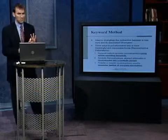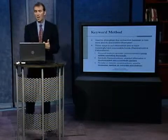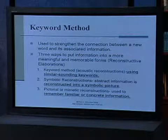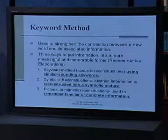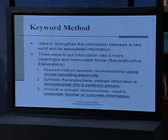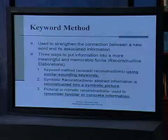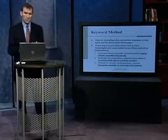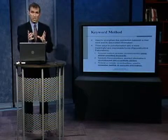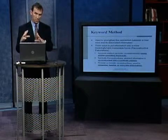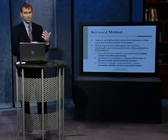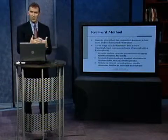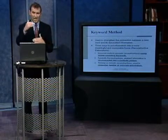There are three parts to the keyword method. The first is you take an acoustically similar sounding word and match it to the new vocabulary term. It's important that this similar sounding word must be familiar to the students — this will be dependent upon the grade level and ability level of the students. Second, the abstract information or definition is then represented in a picture that represents the information we want students to remember. Third, it's tied together with a sentence that ties everything together.